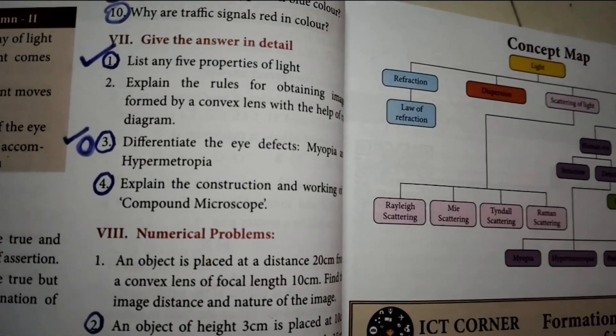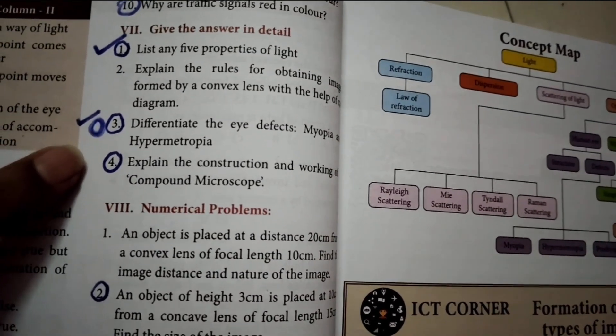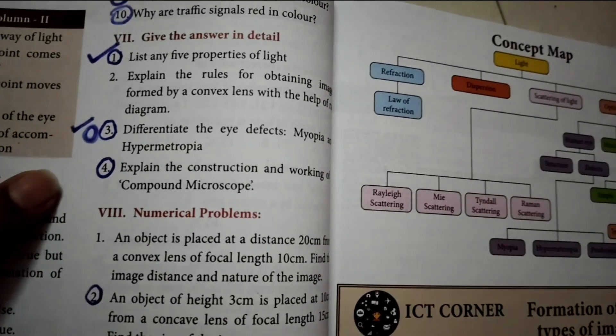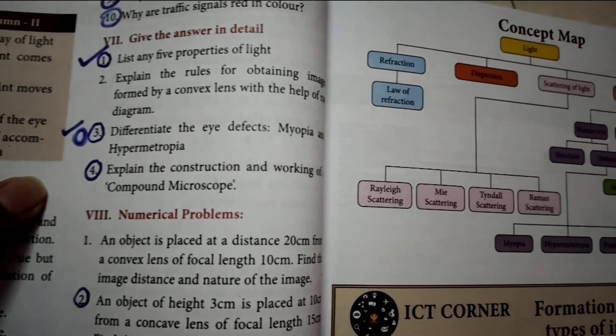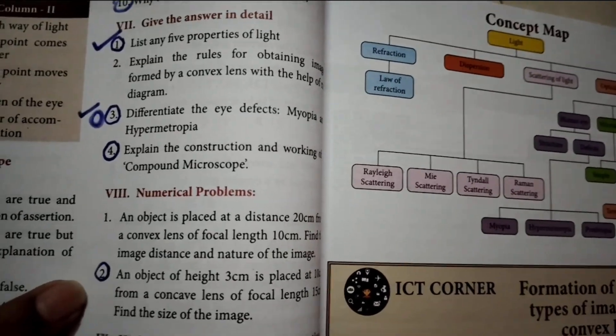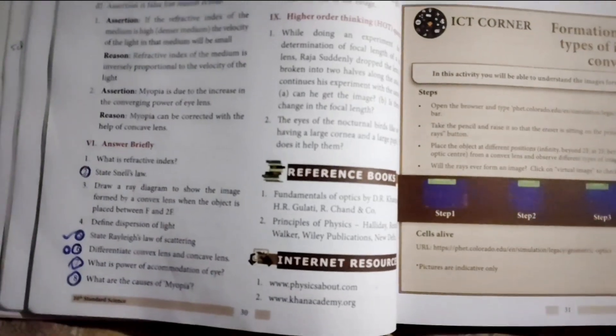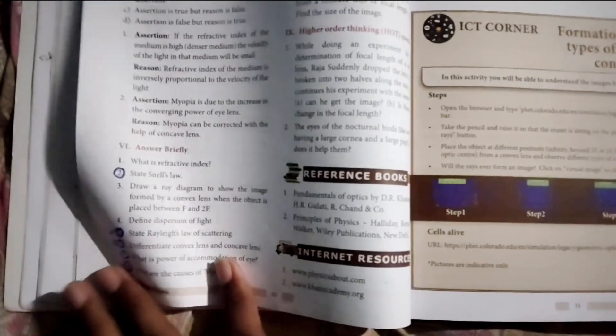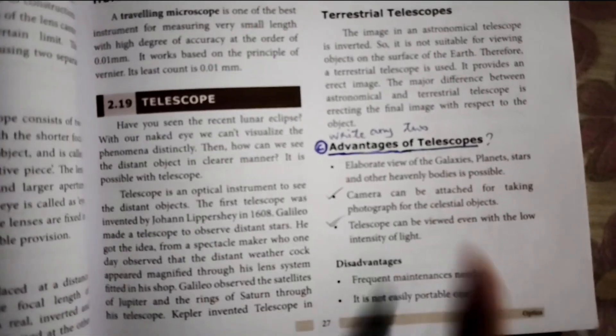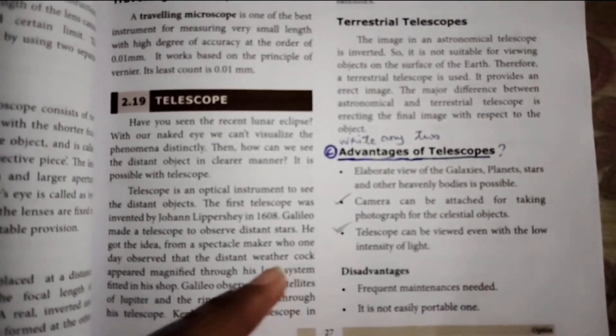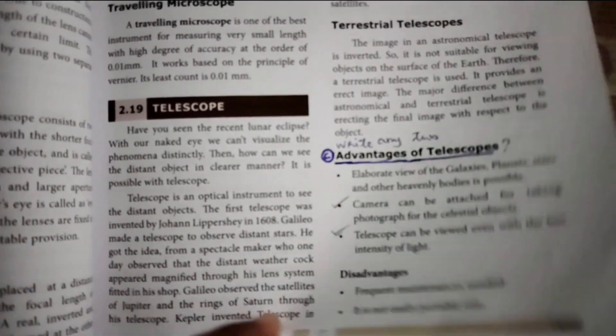Look at this. Next, the second one. Friends, this is a book inside question. This is the advantage of the telescope — this is an important question. It is a two-mark question.